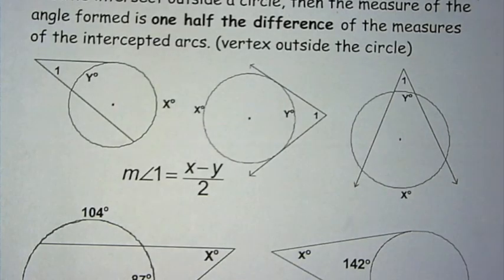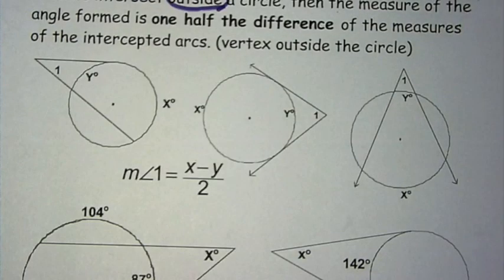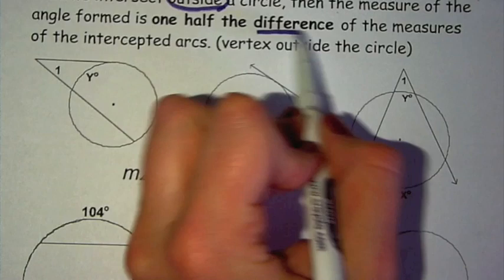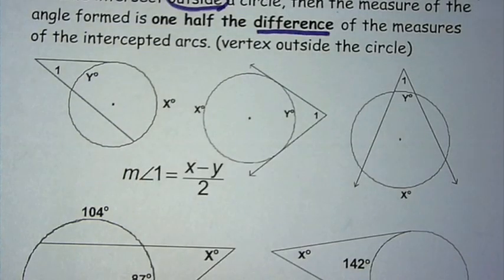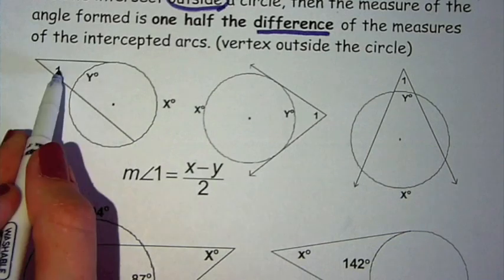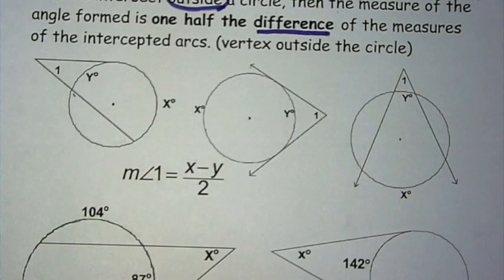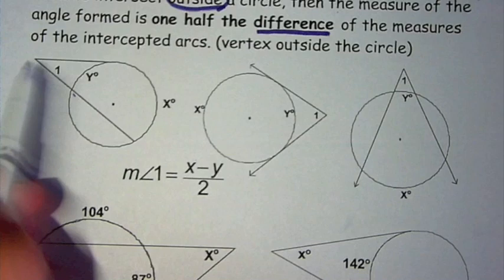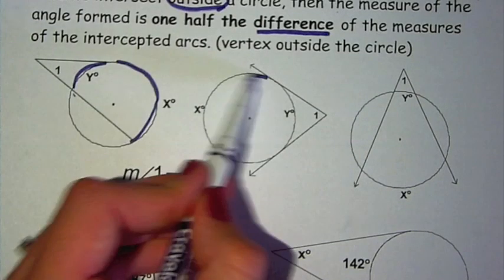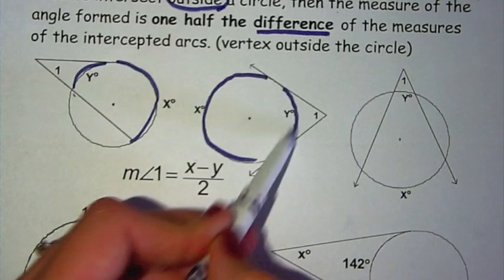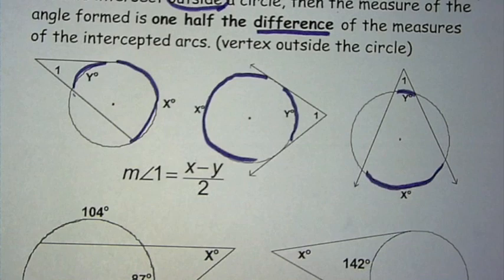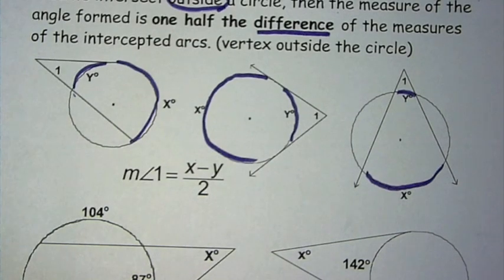The other theorem that we have is when the intersection of the two secant lines is outside the circle. If it's outside the circle, then the equation uses the difference instead of the sum. So if it's inside the circle, it's the sum. If it's outside the circle, it's the difference divided by 2. So you see three different examples at the top of the page of how this might look. Notice that the arcs don't need to be touching each other, but they can.